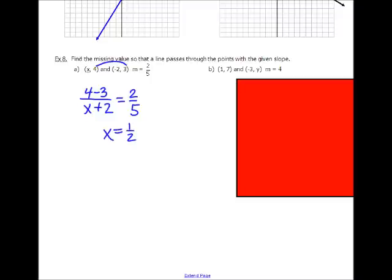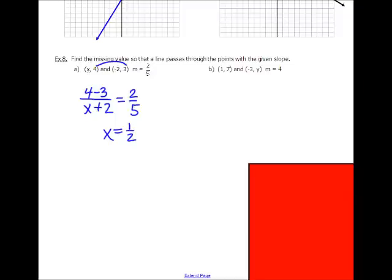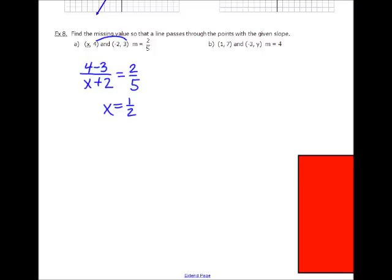And then you can do the next one on your own. Pause here if you need to. And I should get 7 minus y equals 1 minus negative 3. So that should be equal to 4 over 1. And I'm going to cross multiply and solve that. And I should get y equals negative 9.